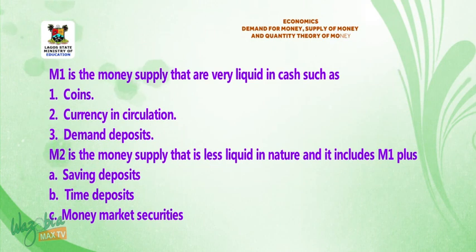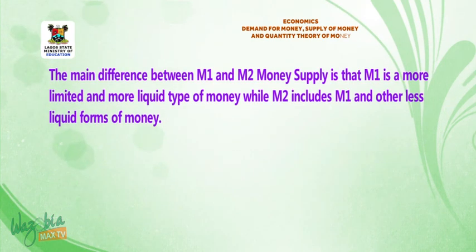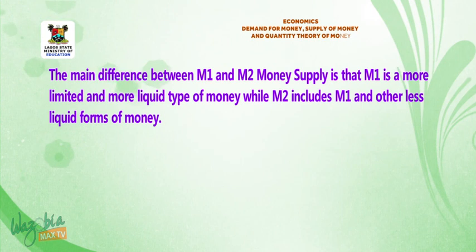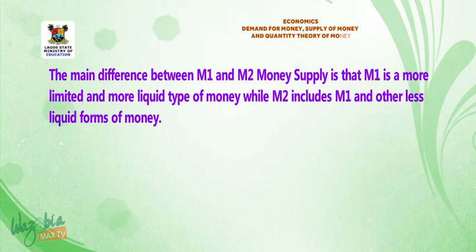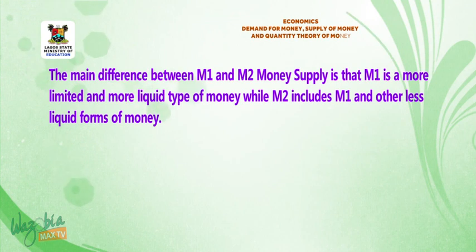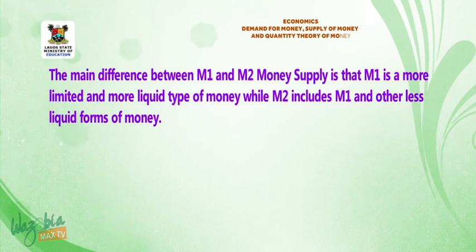M2 is a money supply that is less liquid in nature and it includes M1 plus saving deposits, time deposits, and money market securities. The main difference between M1 and M2 money supply is that M1 is a more limited and more liquid type of money, while M2 includes M1 and other less liquid forms of money.